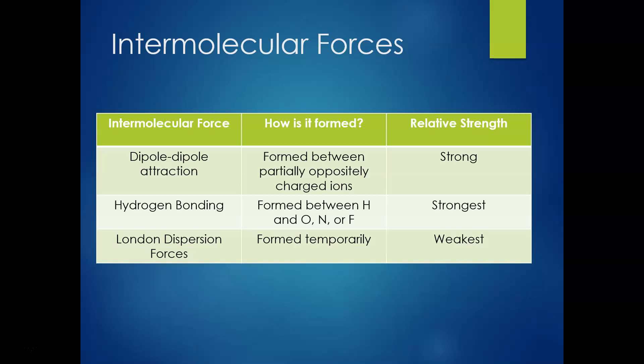So in summary, we have dipole-dipole, which is formed between partially oppositely charged ions. We have hydrogen bonding, which is formed between hydrogen and oxygen, nitrogen, or fluorine. This is the strongest intermolecular force. Then we have London dispersion forces, which are just formed temporarily. It's temporary and the weakest of our intermolecular forces.